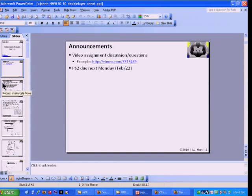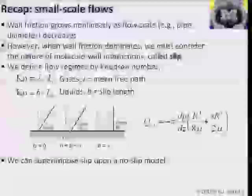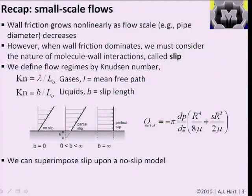Last time we talked about small-scale flows. The importance of friction grows as the scale of our problem goes down. We have to consider the boundary condition more carefully between the fluid and the wall. We called this 'slip'—our way of quantifying the nature of interactions between molecules and the wall. We have the Knudsen number, which is the ratio of the mean free path, or the slip length, divided by the characteristic length scale of our problem.